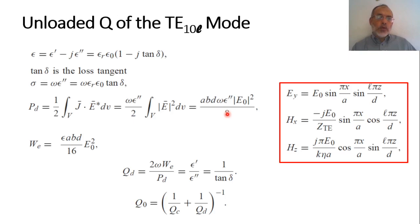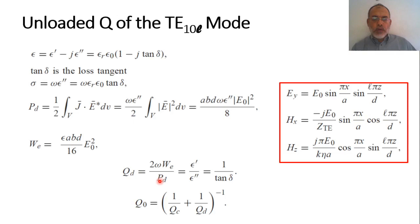The quality factor due to dielectric loss is QD = 2ω·We/PD = 2ω·(εABD·E₀²/16) divided by (ω·ε''·ABD·E₀²/8). Simplifying, QD = ε'/ε'' = 1/tan δ, which is simply the inverse of the loss tangent of the dielectric filling the cavity.